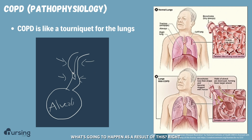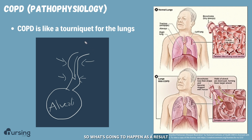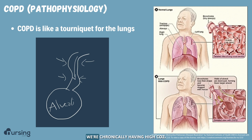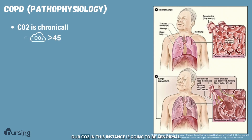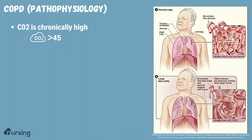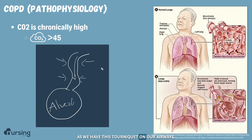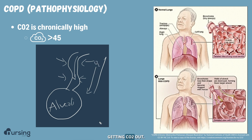What's going to happen as a result? This is like a tourniquet on the lungs. We're tightening up these airways. So in chronic obstructive pulmonary disease, we're chronically retaining CO2 — we're chronically having high CO2. Our CO2 in this instance is going to be abnormal; it's going to be chronically high, greater than 45. Basically, as we have this tourniquet on our airways, we're getting O2 in, but we're having a lot of difficulty getting CO2 out.